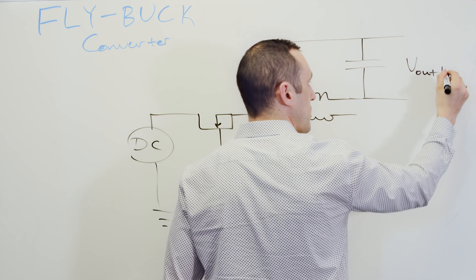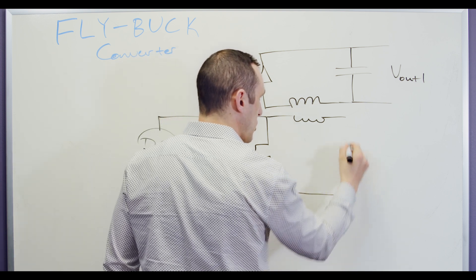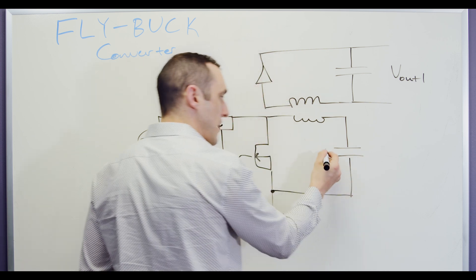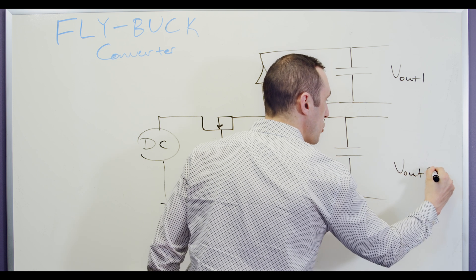So we have vout, and we'll call this rail one. Over here we have essentially our standard buck converter configuration where we have an output capacitor, and then we have vout two.